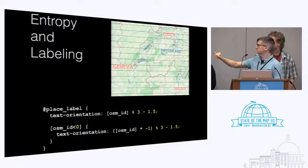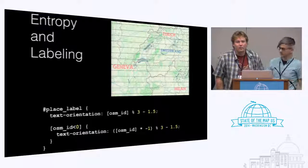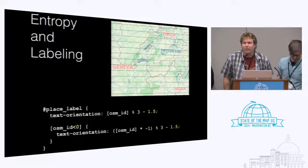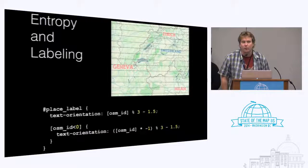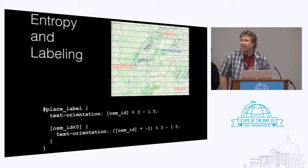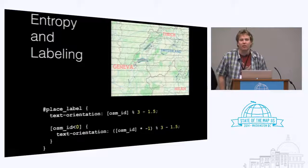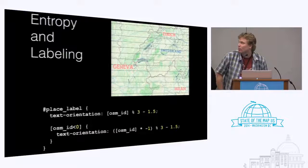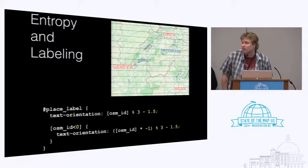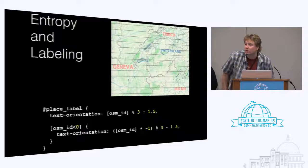The OSM ID less-than-zero condition accounts for when data gets imported into a rendering database and creates synthetic features — they end up getting negative OSM IDs because they don't correspond to actual features. So we're just accounting for that. It's from multi-polygon relations.